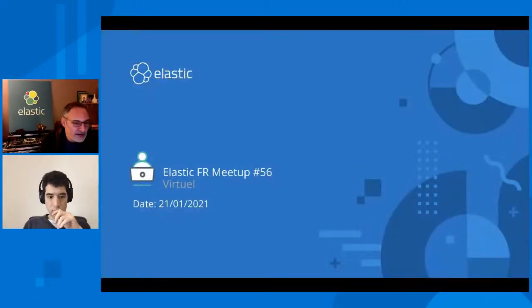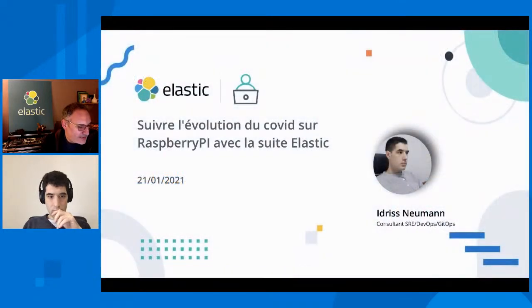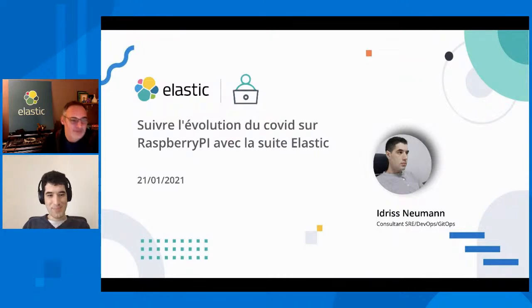Bonjour à tous, bonne année, puisqu'on est en 2021. C'est une nouvelle année de meetup. On va commencer avec le meetup 56, pour lequel nous aurons le plaisir de recevoir Idriss. Idriss va nous parler du suivi de l'évolution du Covid sur Raspberry Pi avec la suite Elastic.